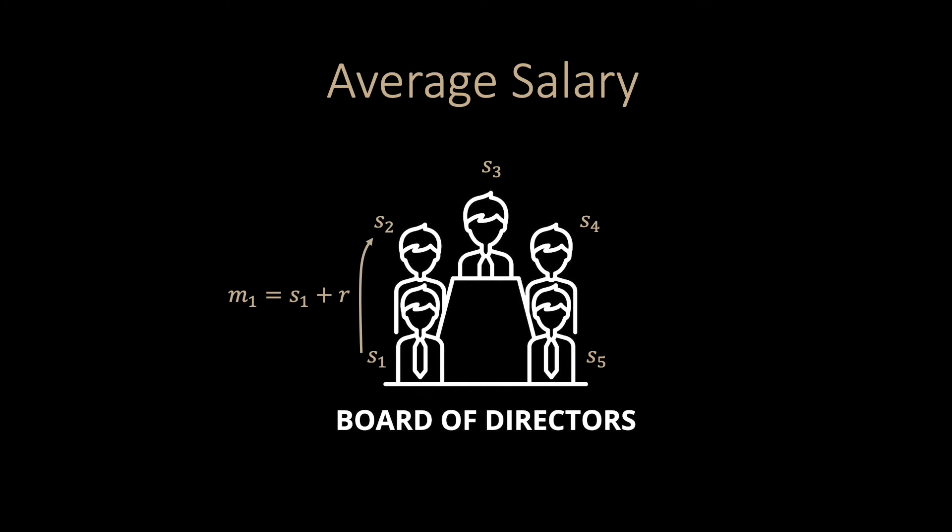The second director sees the sum. Without knowing the random value, the second director cannot know the salary of the first director. This is perfectly secure. The second director takes the sum, adds their own salary, and privately sends the sum to the third director. And so on.